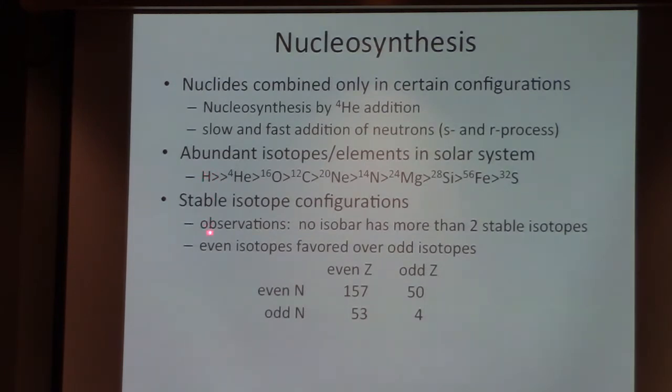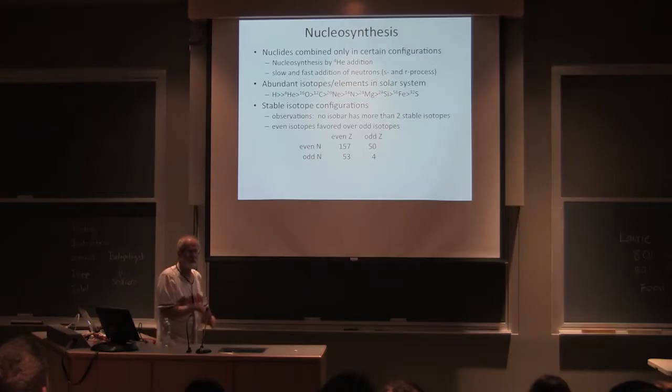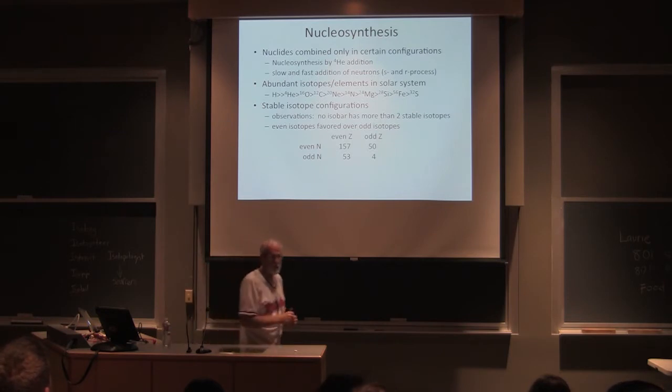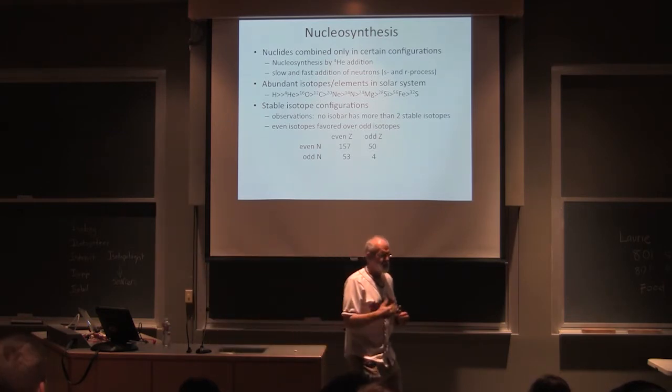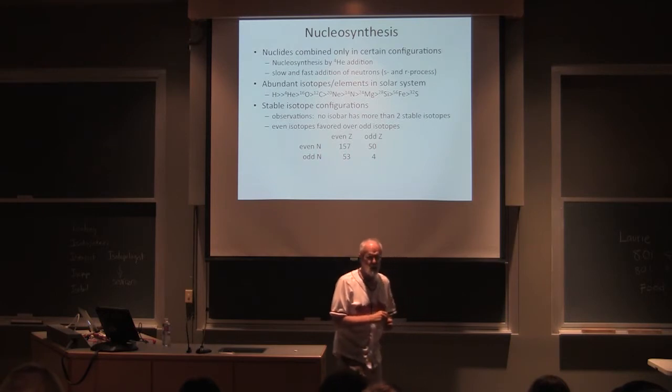Hydrogen is the most abundant, that's what the Sun is made out of. Helium-4, oxygen-16, carbon-12, neon-20, actually then nitrogen-14 and this is a bit interesting. Magnesium-24, silicon-28, iron-56, sulfur-32. We see that except for hydrogen and nitrogen-14, all of these are divisible by 4. Well, 4 is what helium-4 is made out of.